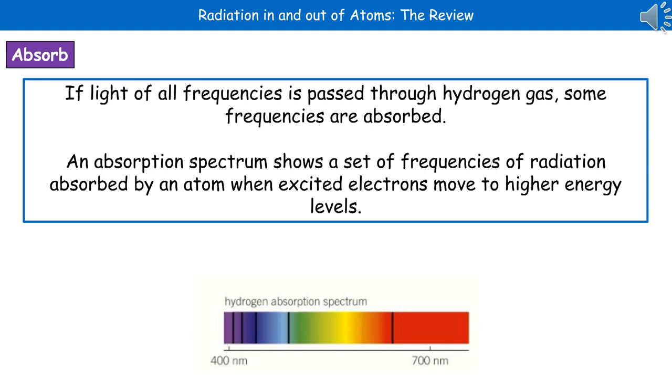If we take some hydrogen gas and pass light of all frequencies through it, we find that some of those frequencies are actually absorbed. So we can produce a hydrogen absorption spectrum, which is at the bottom there. An absorption spectrum will show us the set of frequencies of radiation that's absorbed by an atom when excited electrons are moving to those higher energy levels. Those little bands of black that you can see in the spectrum there are the frequencies that have been absorbed.